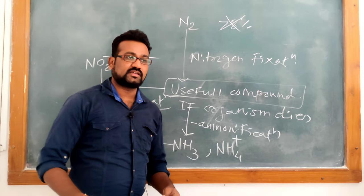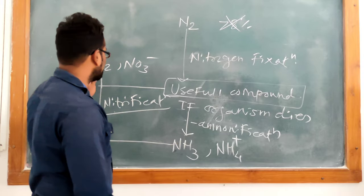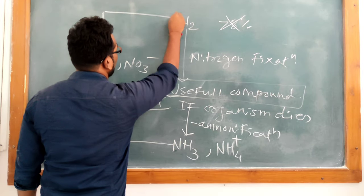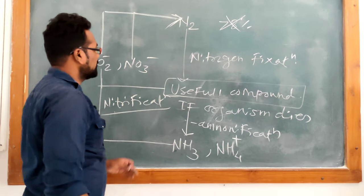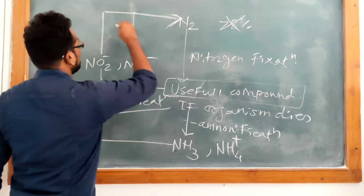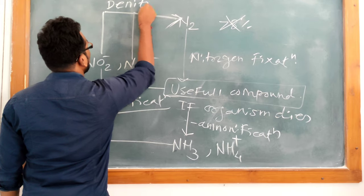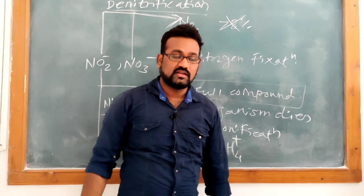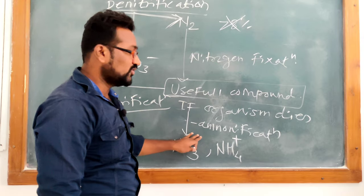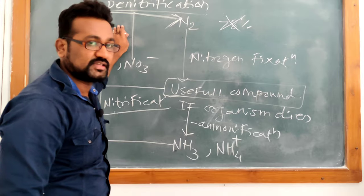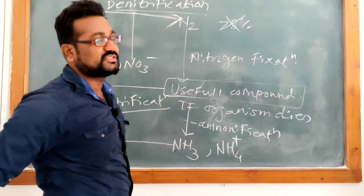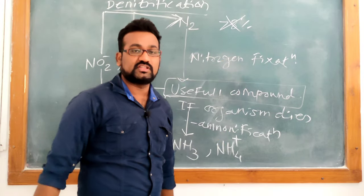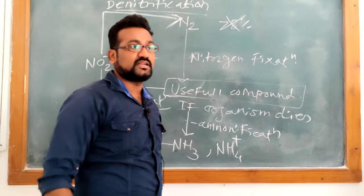After Ammonification and Nitrification, it is essential to release the Nitrogen present in these compounds back into the atmosphere. There are several bacteria who do this job — they release the Nitrogen present in such compounds back into the atmosphere. This process is known as Denitrification. So Nitrogen fixation, Ammonification, Nitrification, and Denitrification together show the Nitrogen cycle which takes place in the environment. It is a very essential process for the continuation of life on this planet, as 78% atmospheric Nitrogen has to get recycled.